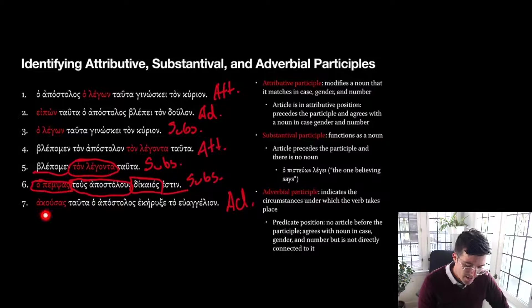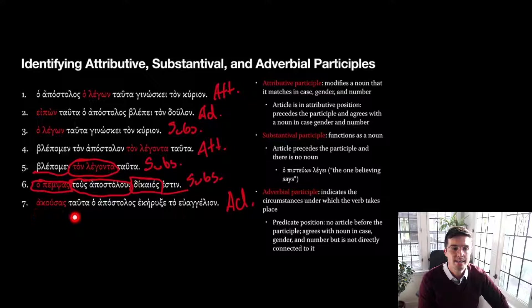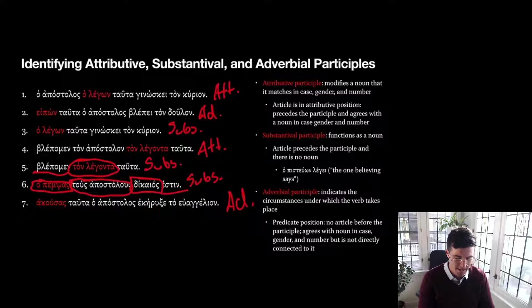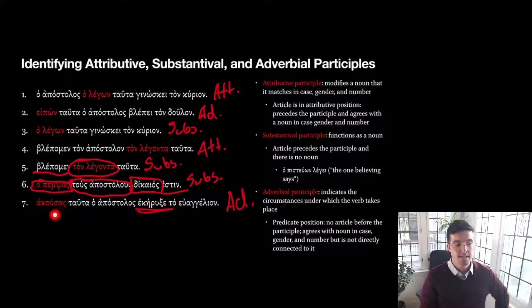The participle can take an object because it's part verb. 'The one sending the apostles is righteous.' Here we have another nominative, and the 'to be' verb is functioning sort of like an equal sign: 'the one sending the apostles equals righteous.' And then here we have another adverbial participle — no article before it. 'Hearing these things,' or better 'having heard these things,' this action is completed. 'The apostle preached the gospel.' So 'having heard' or 'after hearing these things,' the action of hearing is completed, and then the apostle preached the gospel in past time.